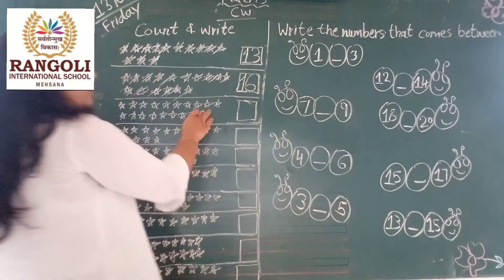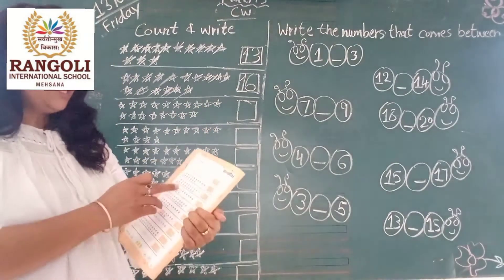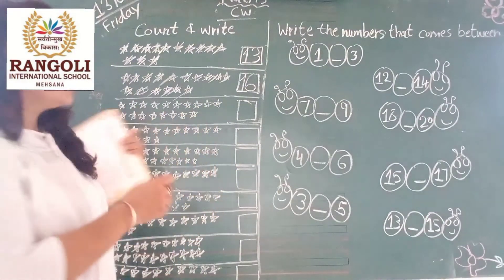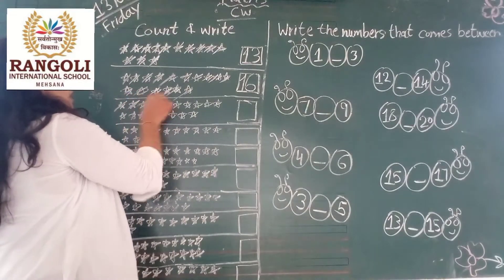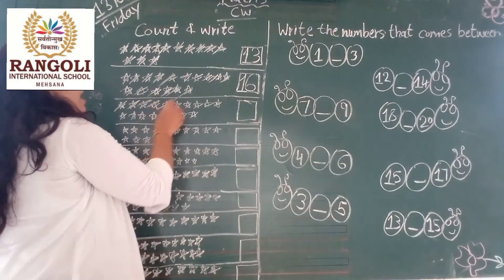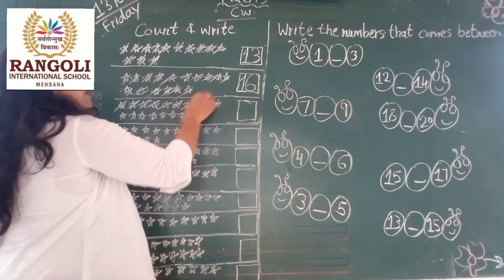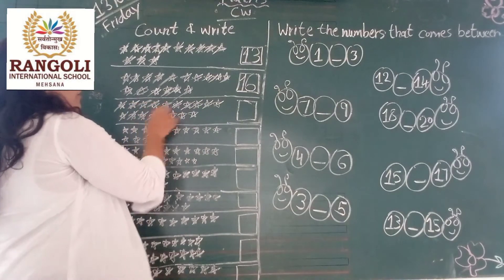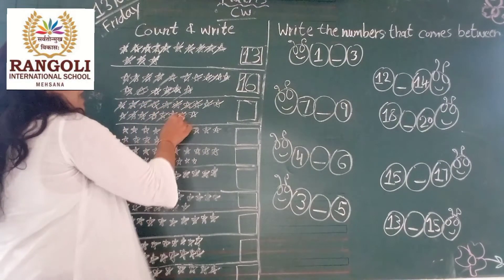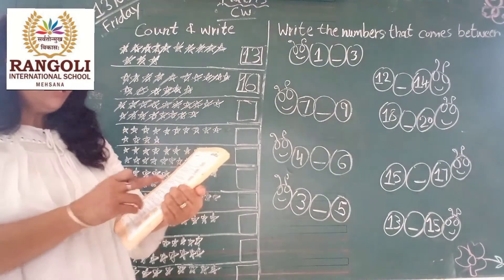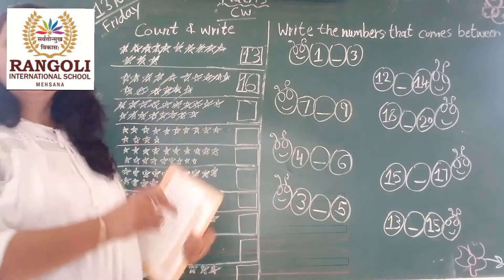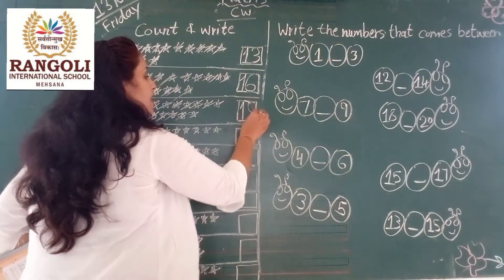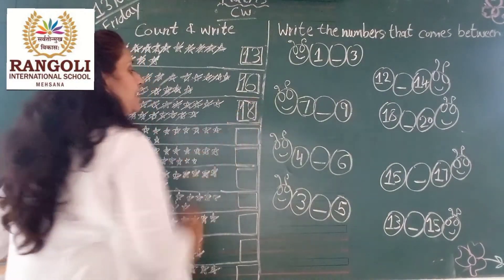Last, third number. How many pink stars? Come with me: 1, 2, 3, 4, 5, 6, 7, 8, 9, 10, 11, 12, 14, 15, 17, 18. How many stars? 18. So, right here write 18.